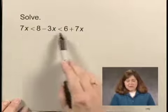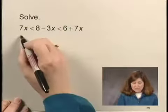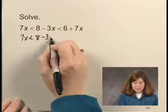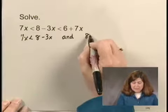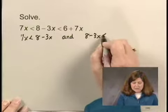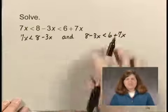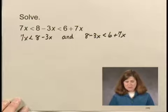Now an inequality written this way is really an abbreviation for the conjunction: 7x is less than 8 minus 3x, and 8 minus 3x is less than 6 plus 7x. We'll solve these separately, and then we'll find the intersection of the solution sets of the separate inequalities.